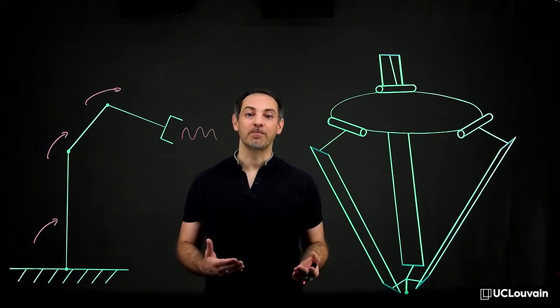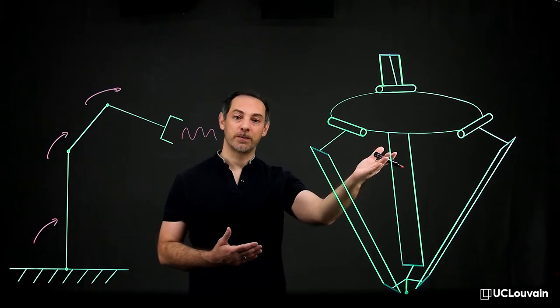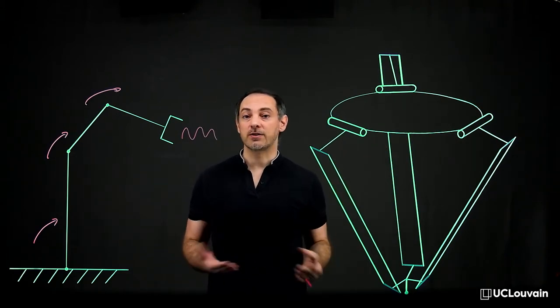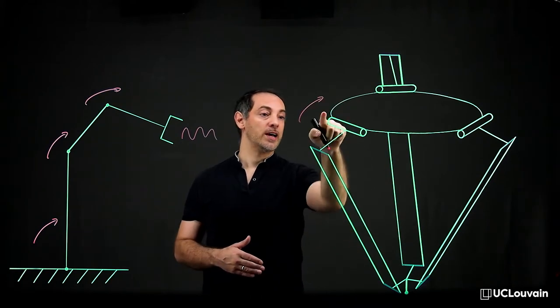Secondly, for a closed-loop multibody system like the delta robot, the objective is exactly the same. For example, to compute the joint torque at the engine here.